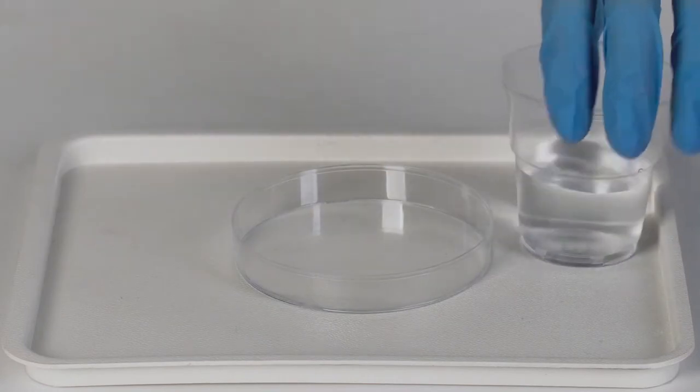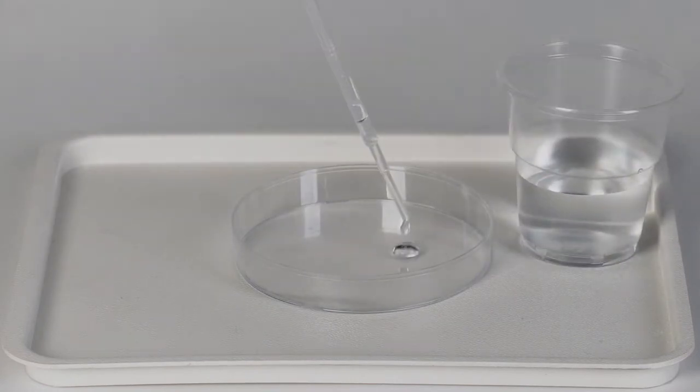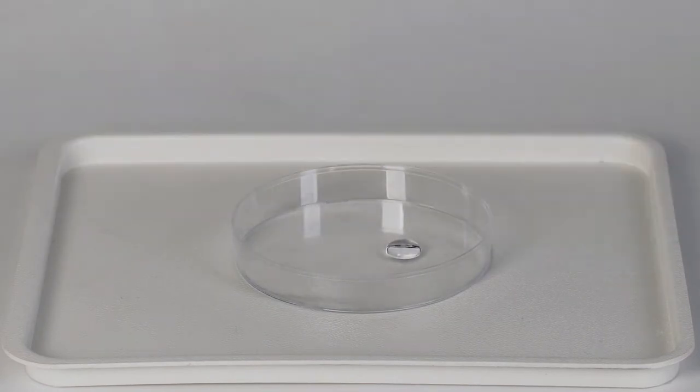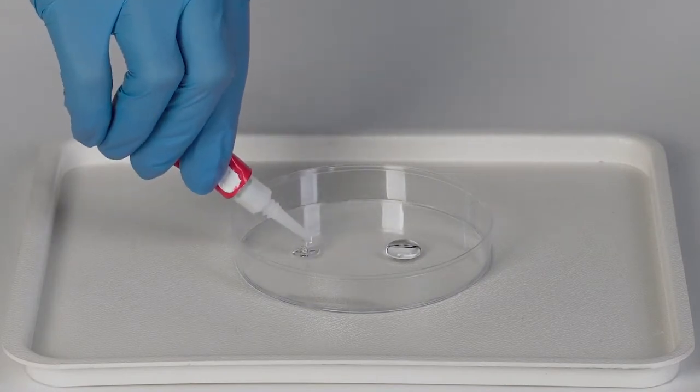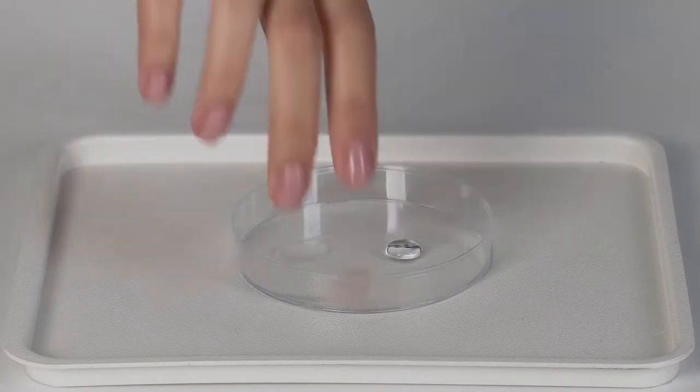Using the Pasteur pipette, place a few drops of water on the Petri dish. Next, place a few drops of superglue on it. It's important that the two don't mix.